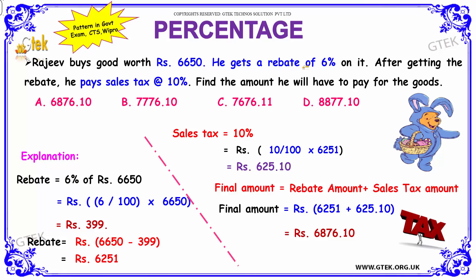Rajiv has a rebate of 6 percentage of the total money. That is, 6 percentage of 6650 is nothing but 6 divided by 100, multiplied by 6650, which gives rupees 399.